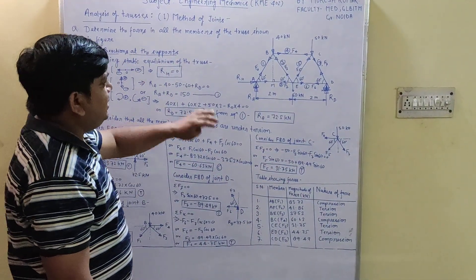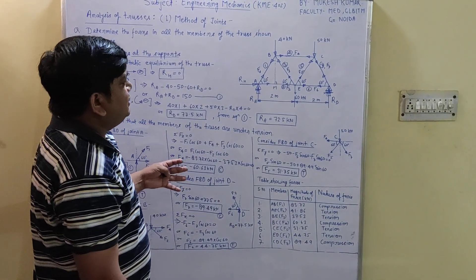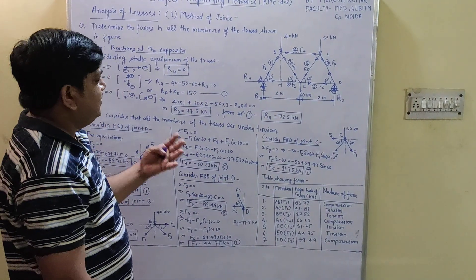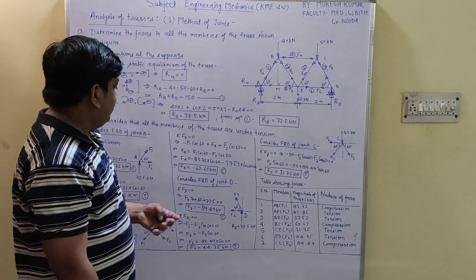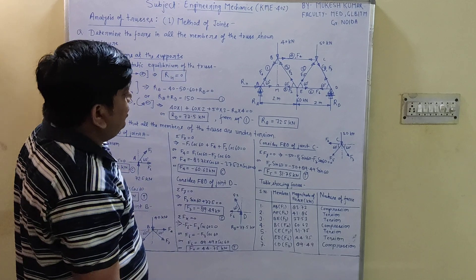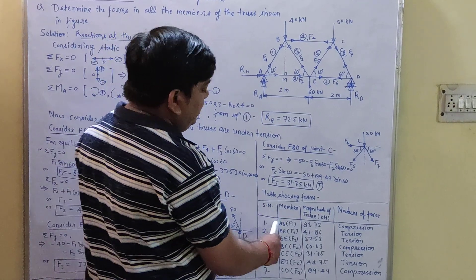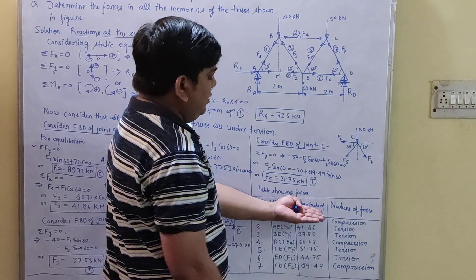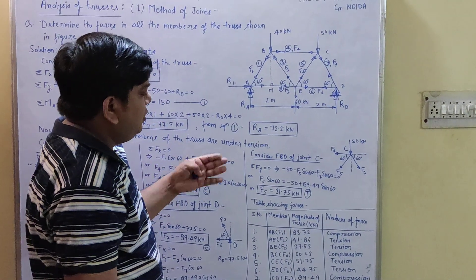After solving at each joint, we can now write down the forces in all members — F1, F2, F3, F4, F5, F6, and F7 — with the magnitudes and nature of each force (compressive or tensile). Finally, when writing your answers in examinations, you can form a table with columns: serial number, member, magnitude of force (in kN or N depending on the problem), and nature of force.